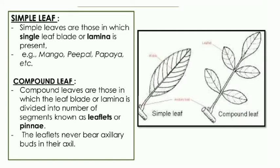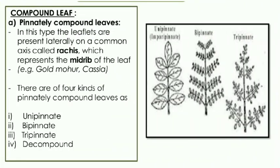In compound leaves, we have two types: pinnately compound and palmately compound. In a pinnately compound leaf, the leaflets are present laterally on a common axis known as the rachis — that is the midrib portion. For example, gulmohor, cassia, and most members of the family Fabaceae have pinnately compound leaves.